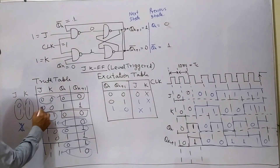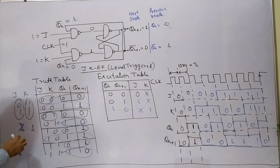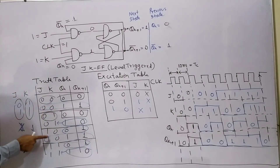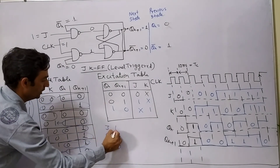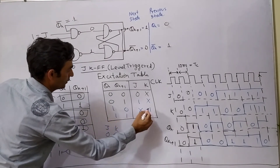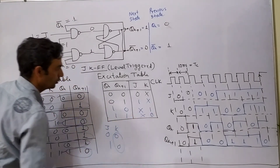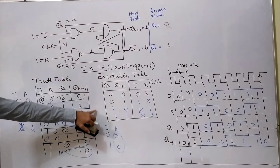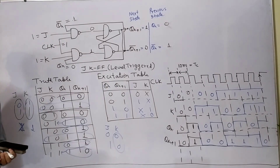For the last set QN to QN+1 = 1 to 1: J=0, K=0 and J=1, K=0. K is staying at 0 and J is don't care. So this is our excitation table. In the next class we will talk about the race-around condition and JK flip-flop.